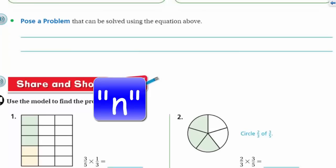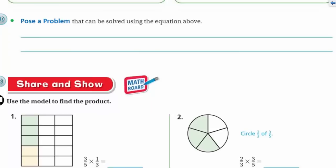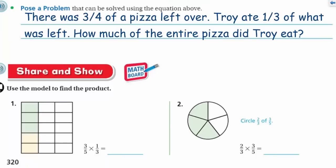Suppose a problem that can be solved using the equation above. They look like pizzas up there, so let's make a pizza problem. There was three-quarters of a pizza left over, and our friend Troy ate one-third of what was left. How much of the entire pizza did Troy eat? Let's go ahead and write our problem.